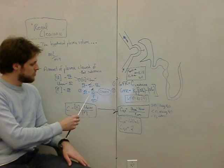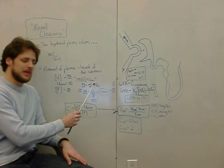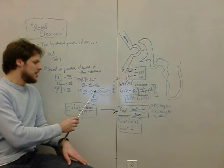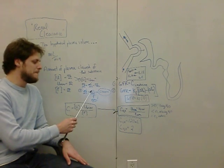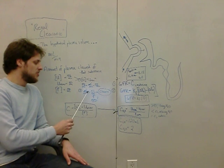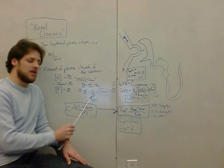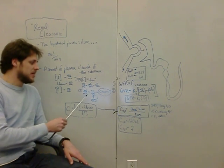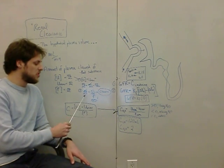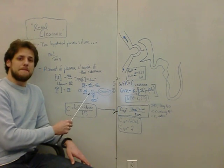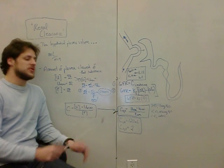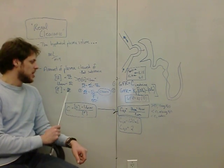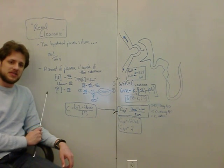So step one: calculate mg/min excreted. Step two: take that mg/min and divide by the plasma concentration. Using unit analysis, the mg cancels out and you end up with mL/min. That gives you clearance — the amount excreted per minute divided by the plasma concentration tells you the volume of plasma that would contain that amount.